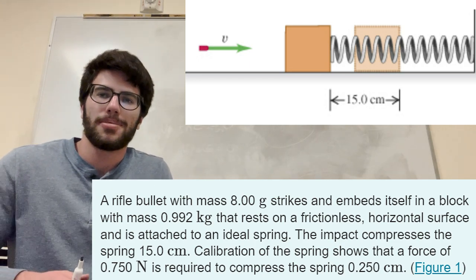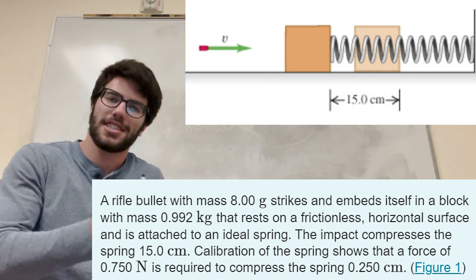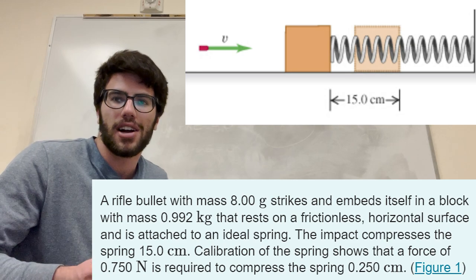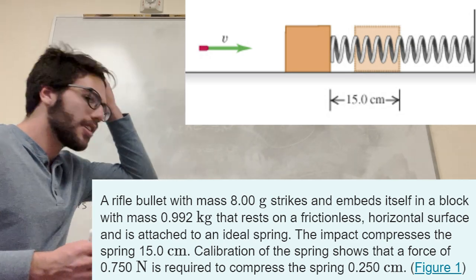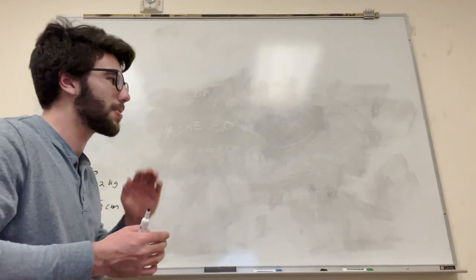What's up Cal gang? Alright, we got this problem where a bullet hits a wooden block and compresses the spring. It wants us to know the velocity of this block right after the collision happens. It tells us how far the spring goes in. So basically what we're doing here is this is a big energy problem.